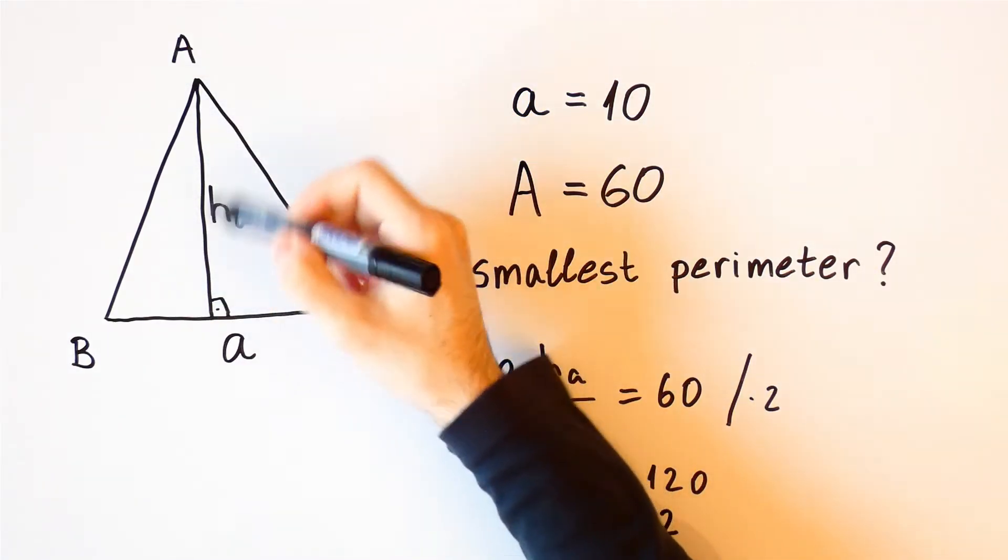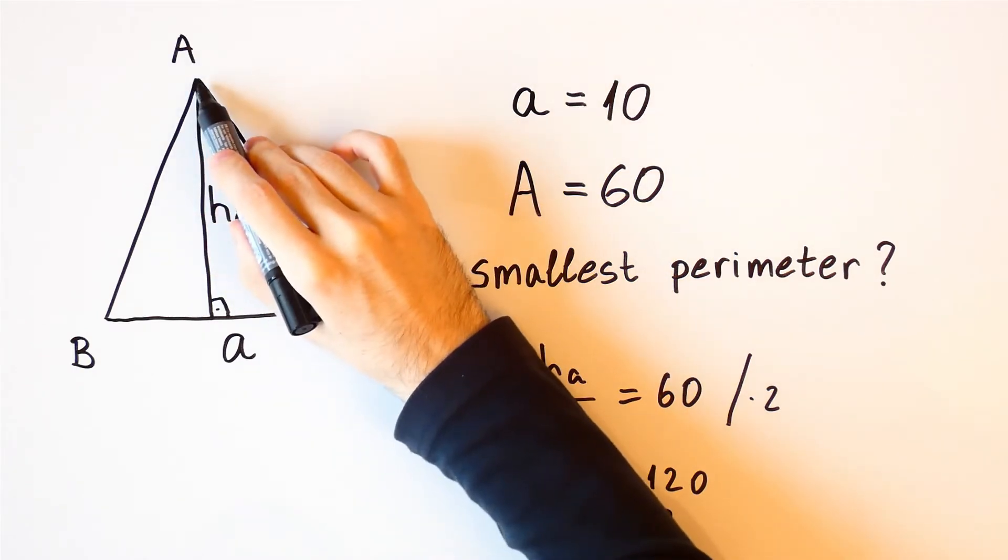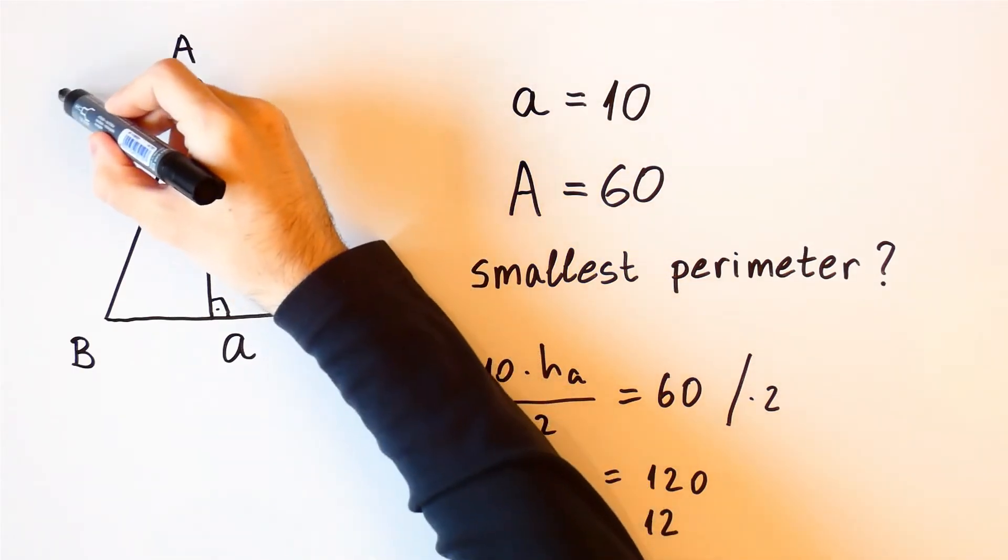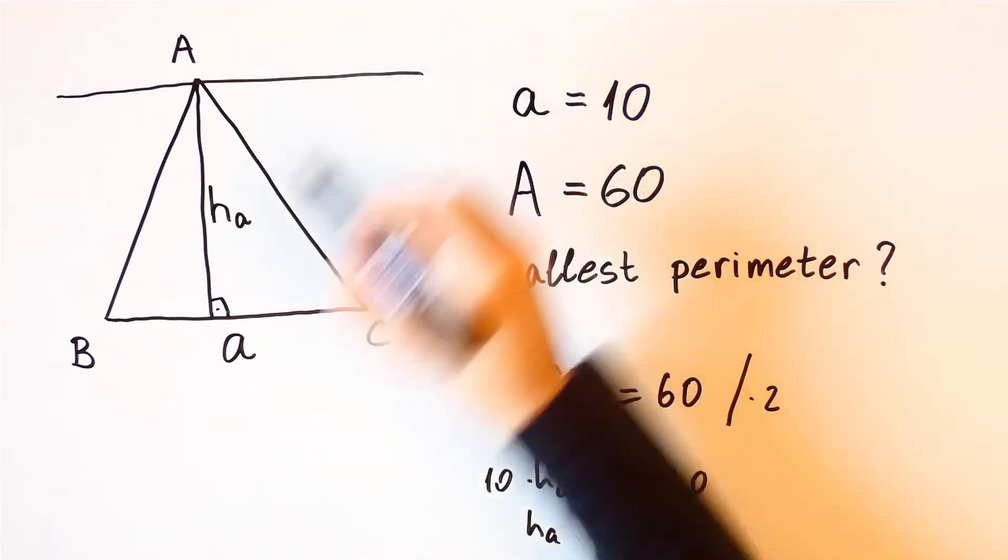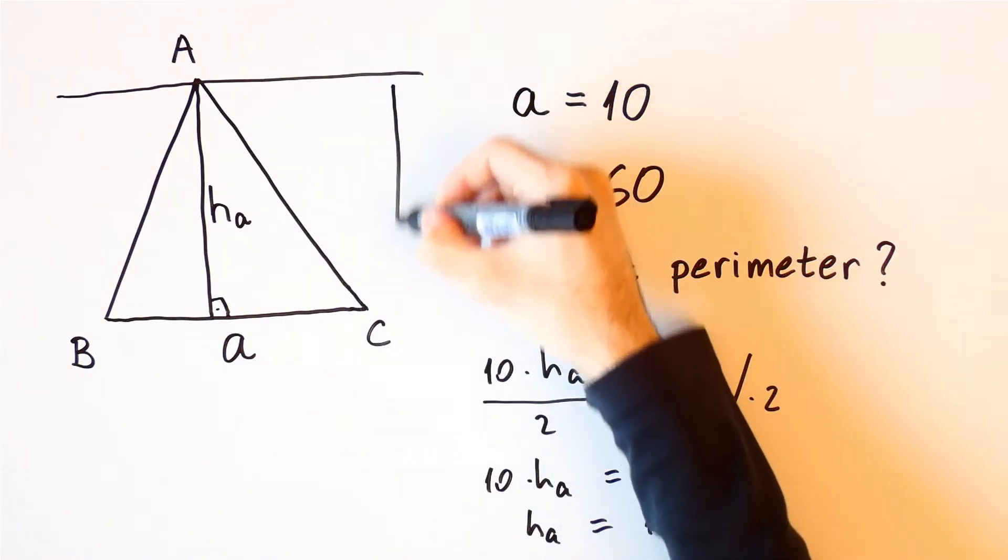But now that we know this height we can see where the vertex A must be. It must be on a line that is parallel to BC at a distance 12 from it.